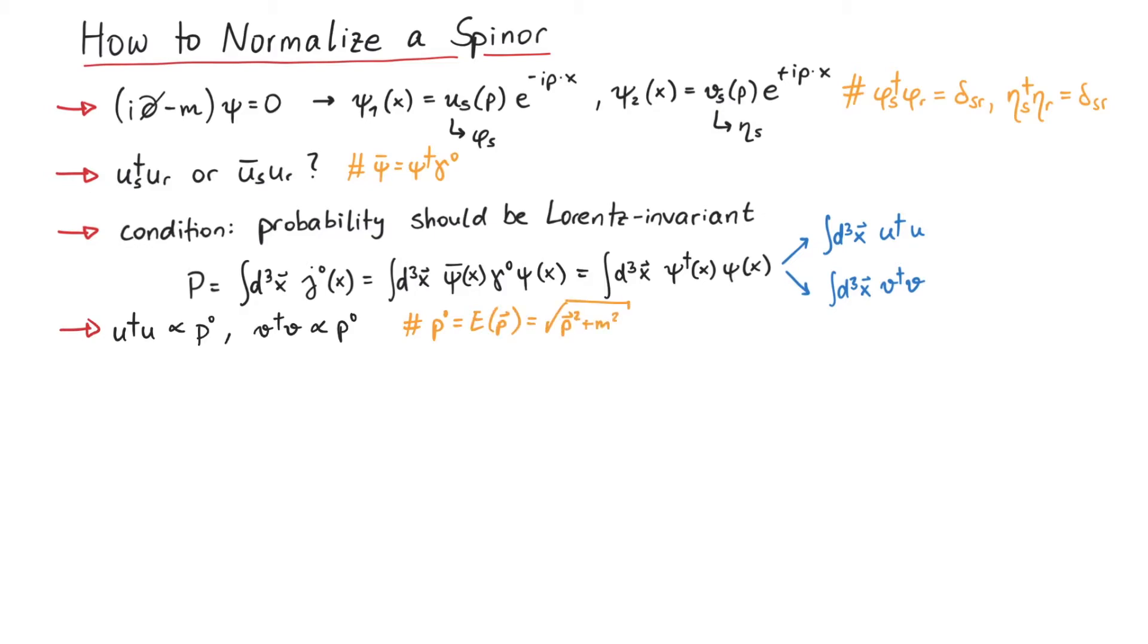The bad news is that there are infinitely many possibilities to make them proportional to the energy. However, some choices are more useful in later calculations than others. The two most commonly used conventions are two times the energy and energy divided by mass.